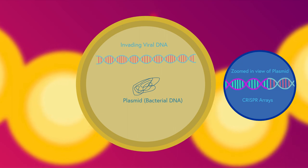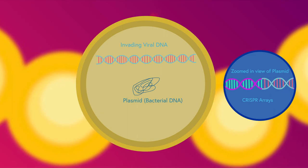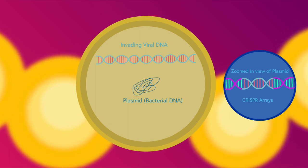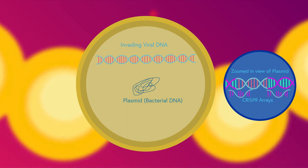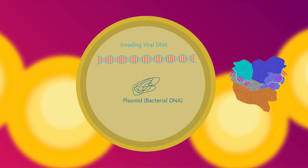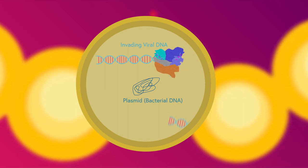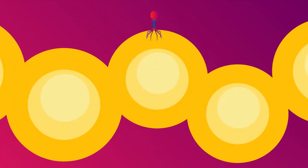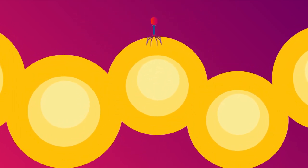This allows the bacteria to remember the specific virus as well as other strands closely related to it, so that way if it's ever invaded again, it will instantly recognize it's invaded and produce the complementary RNA sequence to the CRISPR arrays, which guide an enzyme called Cas9 to the specific parts of the invading virus' DNA which complement the RNA where it's cleaved, thereby rendering the viral DNA useless.